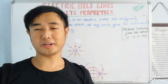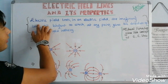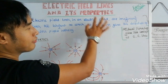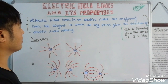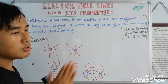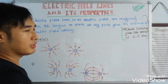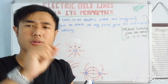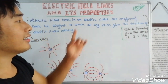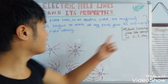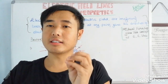Electric field lines represent the field. In the definition, electric field lines in an electric field are imaginary lines. The tangent to which at any point gives the direction of electric field intensity at that particular point.